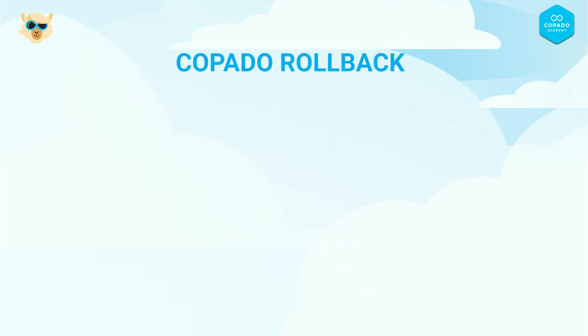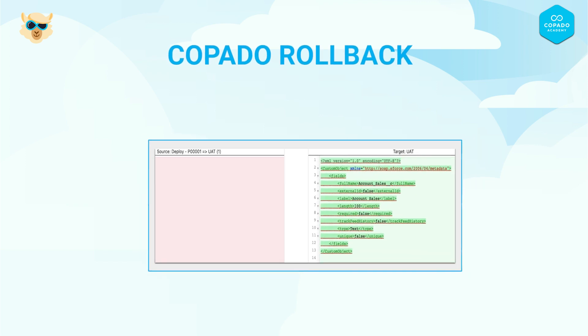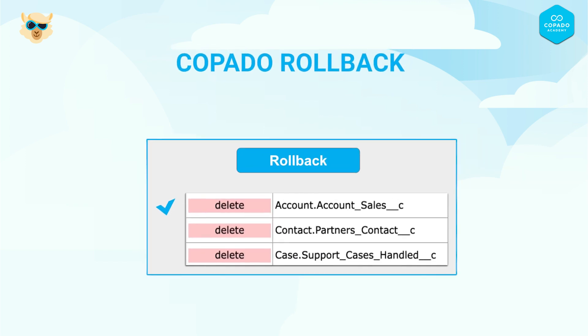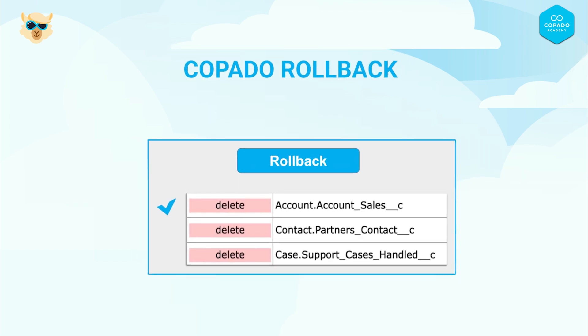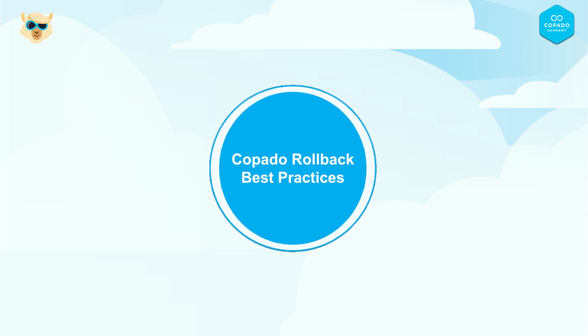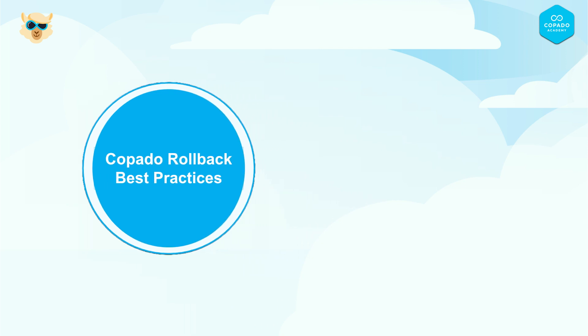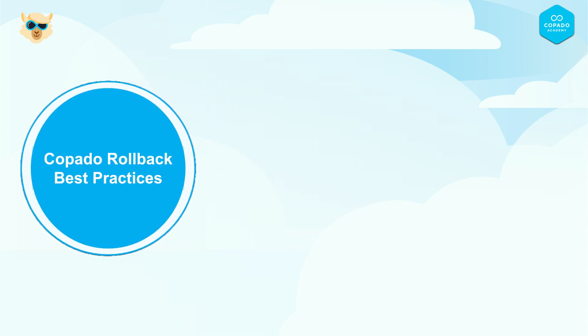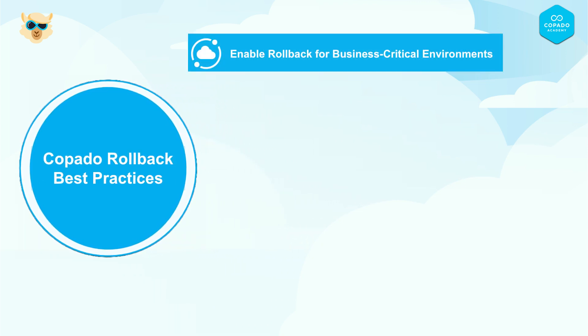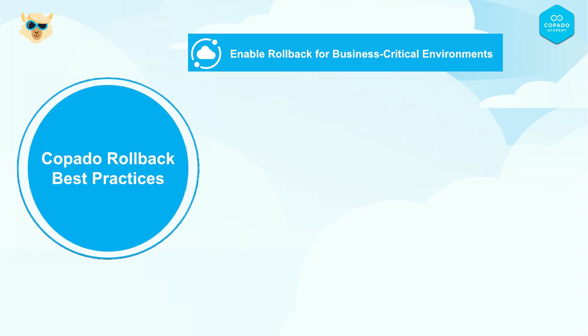With the Copado rollback feature you can quickly compare and select only those changes you want to roll back, which saves you time and final hour slip-ups. Let's begin with some useful practices for performing a Copado rollback. These will help you get the most out of your rollback process and avoid any potential issues. Enable rollback for business-critical environments — by enabling the rollback feature for environments like UAT or production, you can easily minimize storage consumption during deployments.